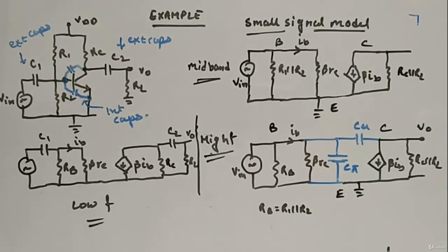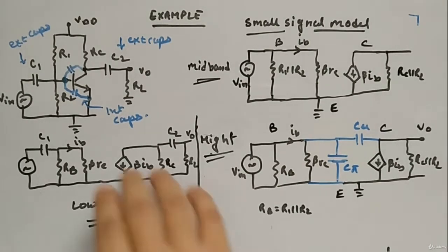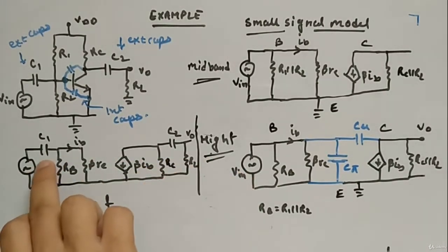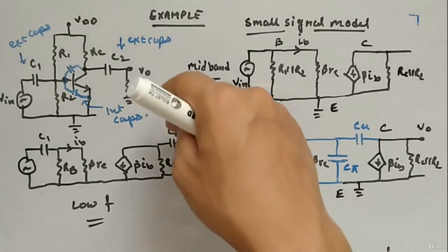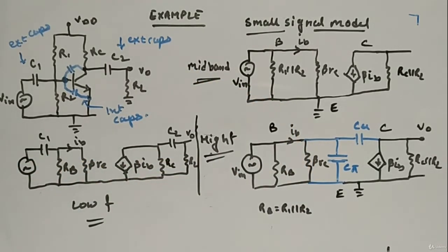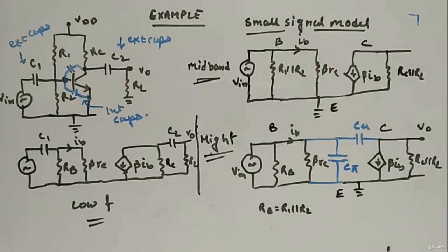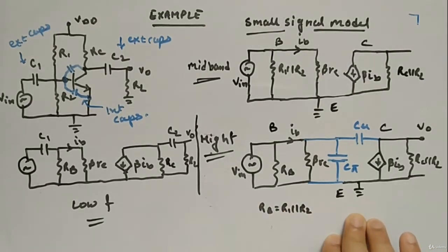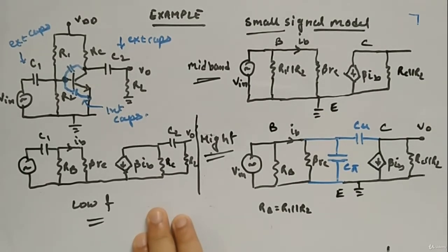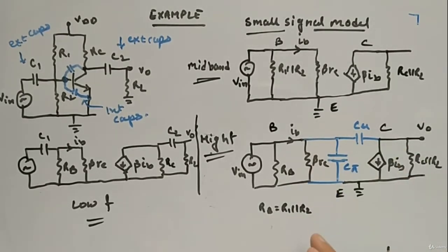We have covered both the low-frequency and high-frequency parts. For low frequency, we calculated the lower 3dB frequencies corresponding to each capacitor and plugged them into the equation: Am divided by the square root of (1 plus fL divided by f). The low-frequency circuit behaves as a high-pass filter and the high-frequency circuit behaves as a low-pass filter.